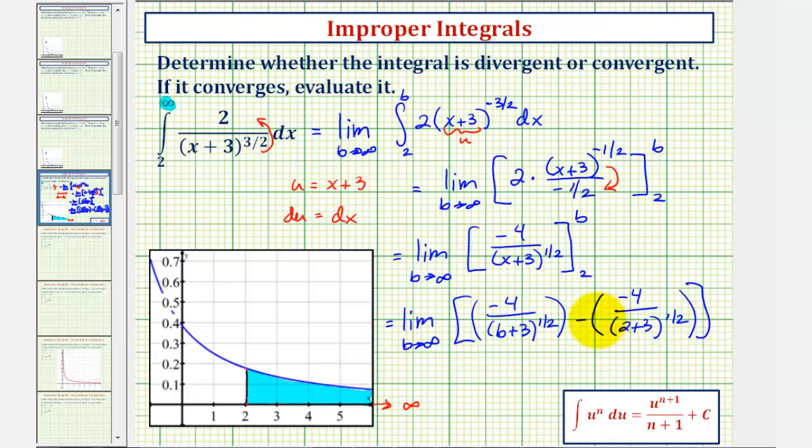Now we'll evaluate this limit. Notice as b approaches infinity, this fraction here approaches zero, since the numerator is a constant and the denominator increases without bound.